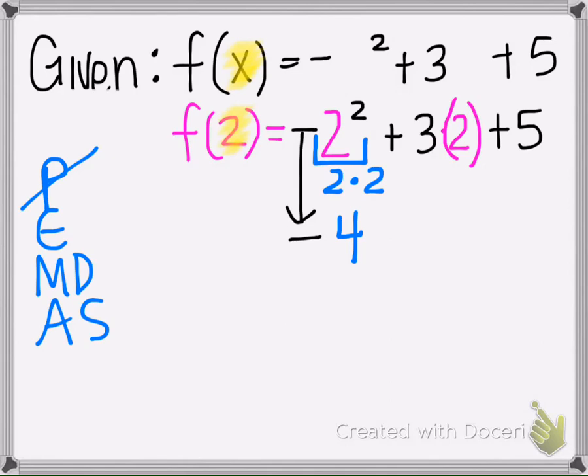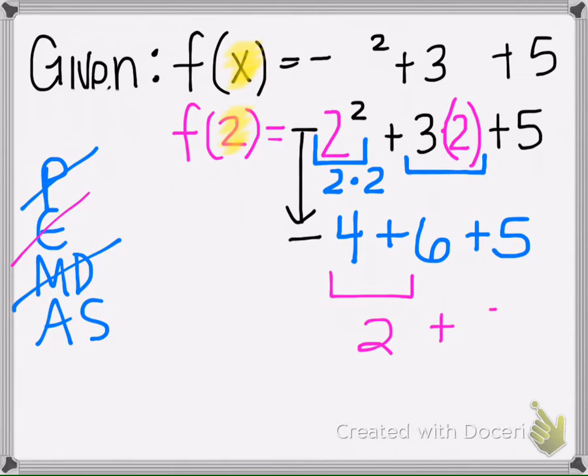Okay, so then next we're going to multiply and divide from the left to right. So here we have multiplication. And now we're going to add and subtract. So our answer is 7.